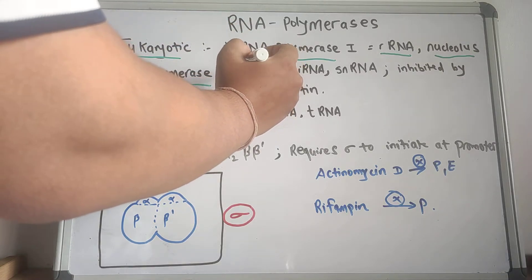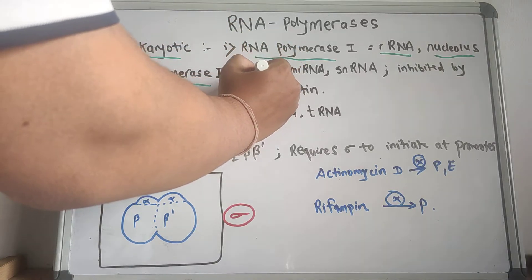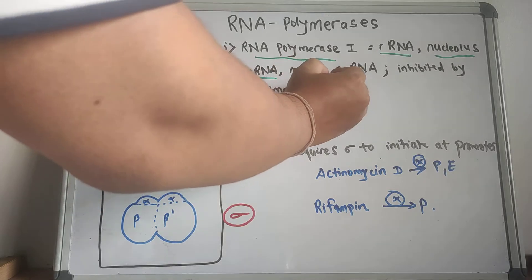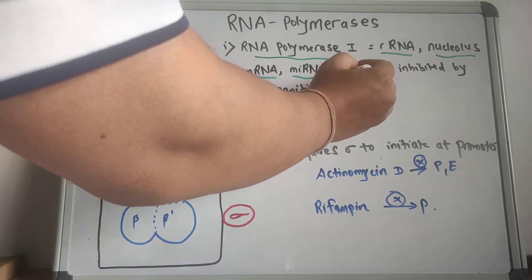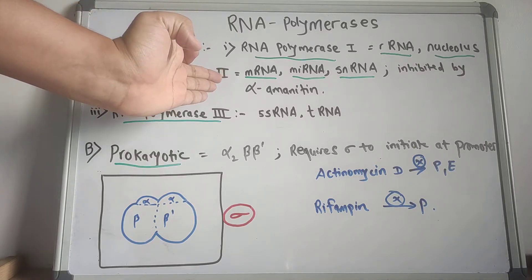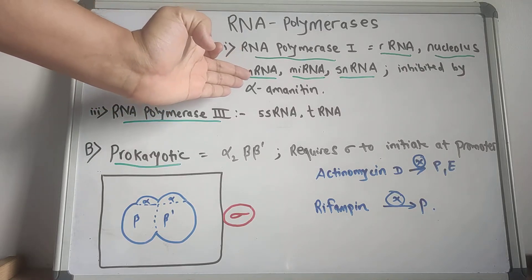RNA polymerase 2 makes the mRNA, microsomal RNA, and small nuclear RNA.